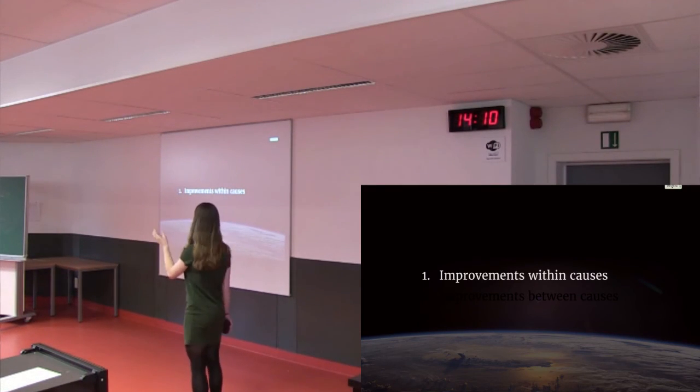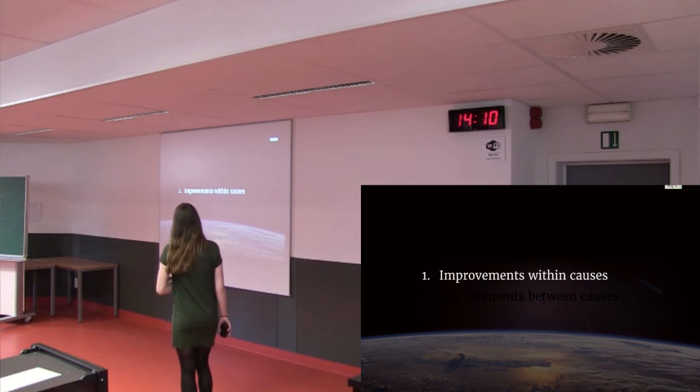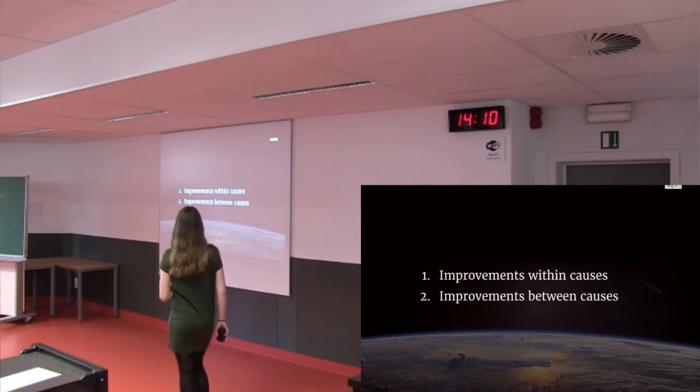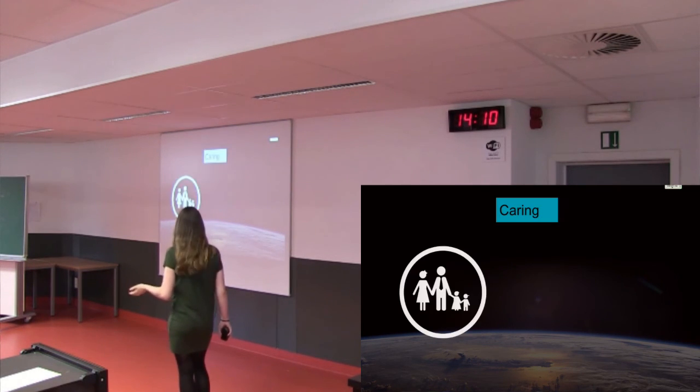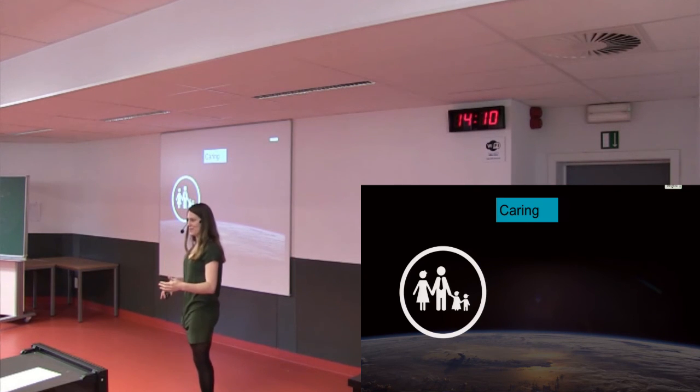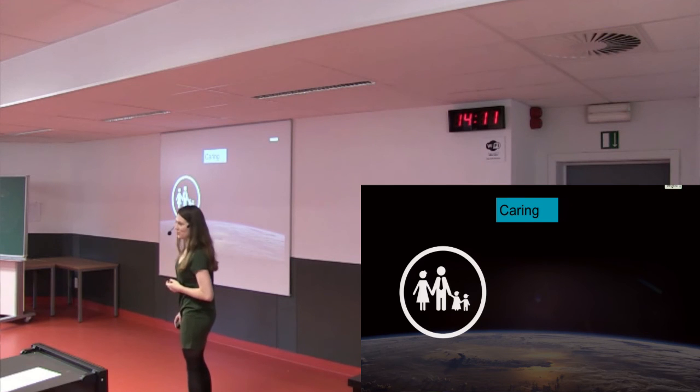So, in EA, we look at not just improvements within causes, so given that I care about education, what's the best thing I can donate to? We also try to find improvements between causes. So, Effective Altruists spend a lot of time thinking about how they can do even better by this idea of expanding the moral circle.